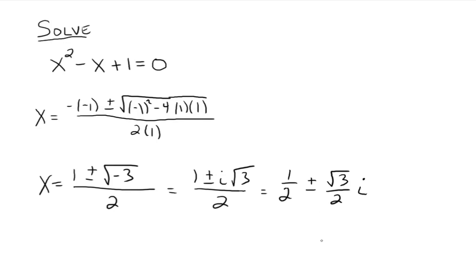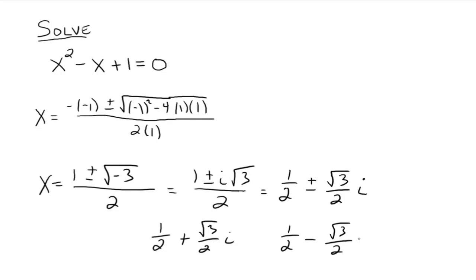I'm writing it this way because I want you to see that there are two numbers: 1 half plus the square root of 3 over 2 times i, and 1 half minus the square root of 3 over 2 times i. These two numbers both satisfy this equation. If you plug either one in for x, you get 0, so each is a zero of this function.